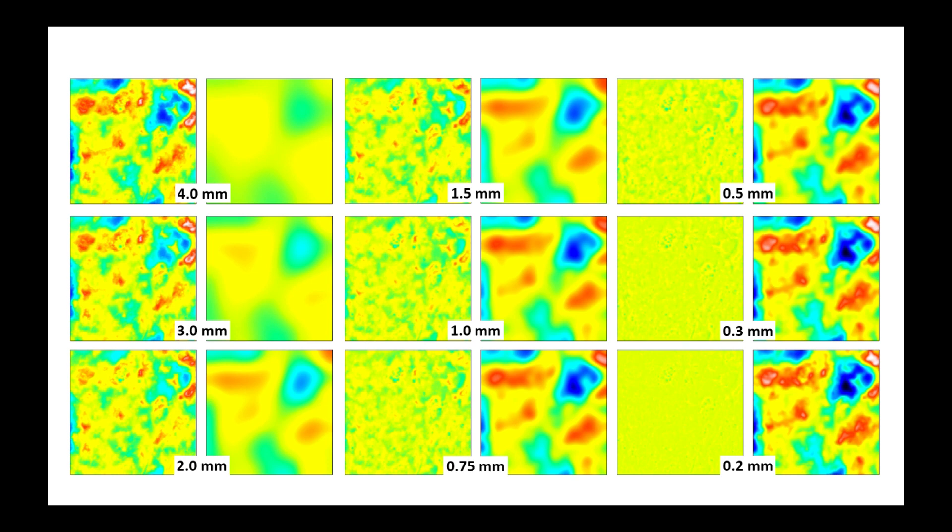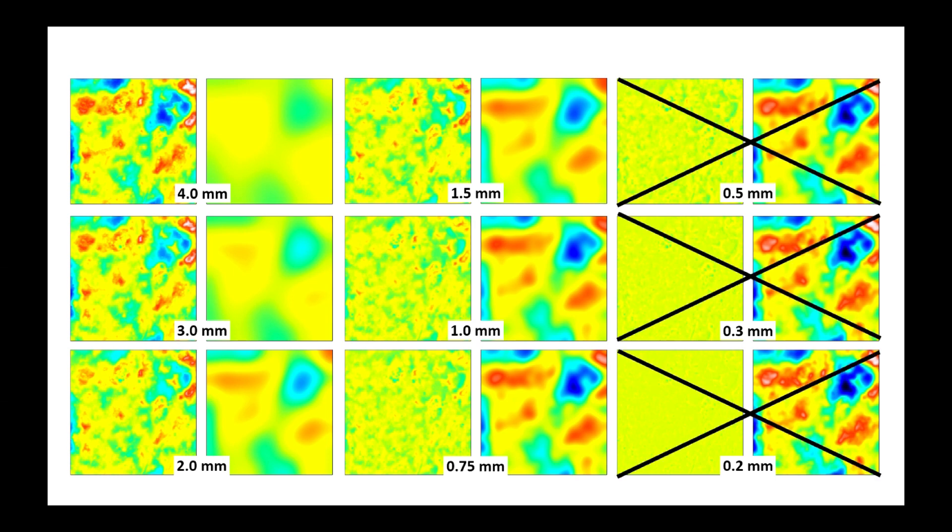By varying the cutoff, we can see how the wavelengths representing the different components of the surface texture are distributed between roughness and waviness. For example, the first filtering, with a cutoff of 4 mm, gives a roughness almost identical to the starting surface, and a weak waviness. On the roughness, we see that the blue basin at the top right of the image is still pronounced, which means that the image still includes wavelengths that belong to the waviness. At the other end, with a cutoff of 0.2 mm, the waviness is almost identical to the starting surface and the roughness contains only noise. We can therefore eliminate the smallest cutoffs, because the waviness contains too many details.